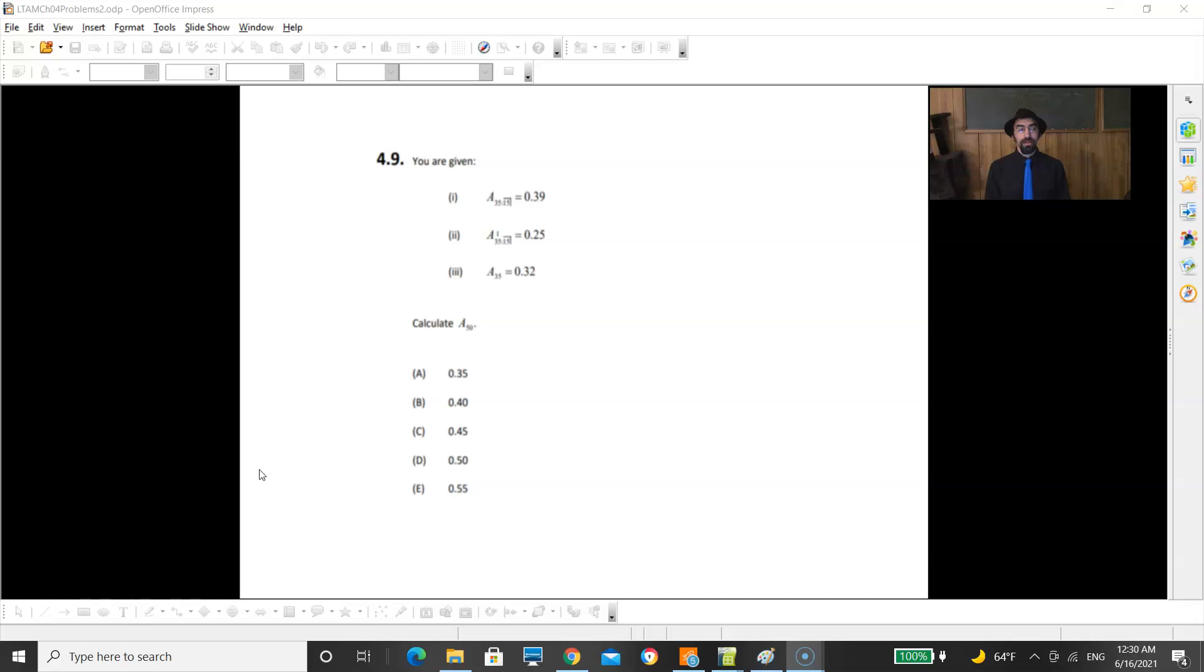Previously we went 4.1 to 4.7. 4.8 had to get deleted because it was misclassified, so it and 4.5 were misclassified. For this one you're given Big A 35 colon angle 15 is 0.39, Big A 35 first colon angle 15 is 0.25, and Big A 35 is 0.32. You have to calculate Big A 50.